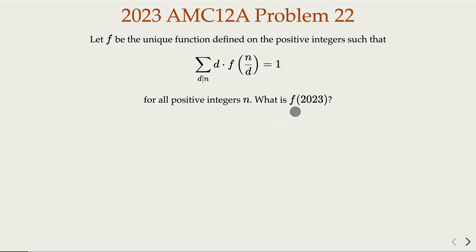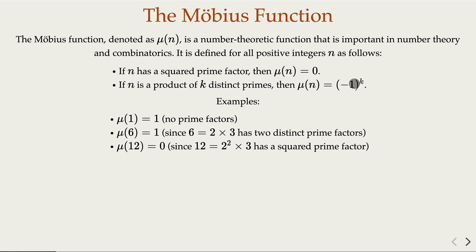We're asked to find the value of F(2023). If you know Möbius' function μ(n), it's a very useful tool in number theory. If a number has squares in its prime factorization, μ is 0. If it's square-free, it depends on the number of unique prime factors — negative 1 raised to that count.